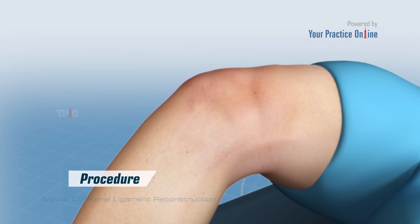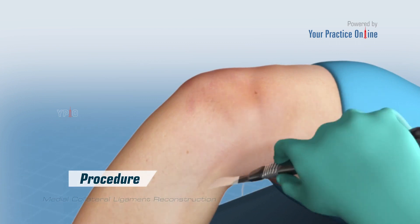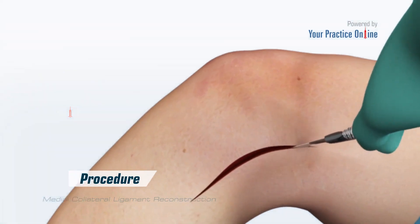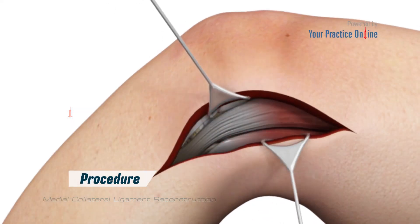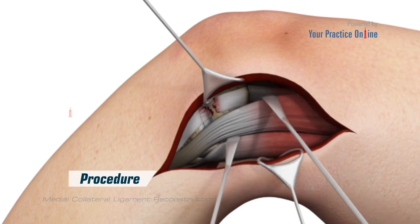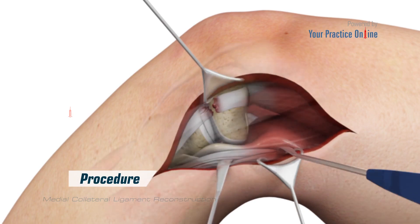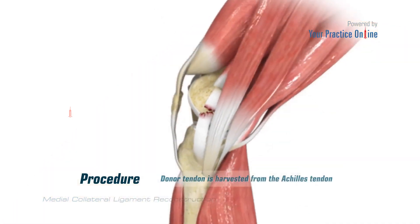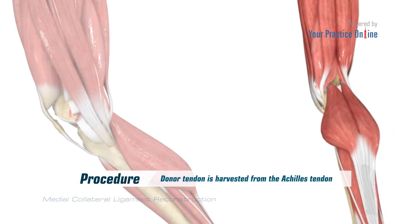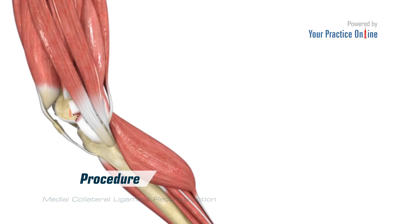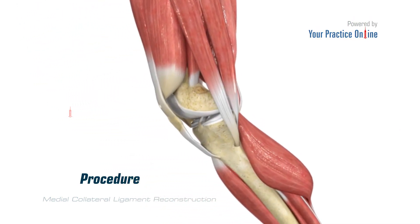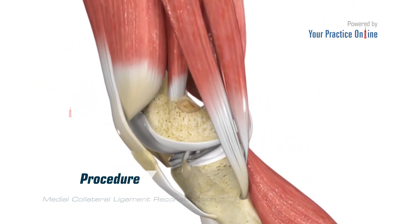Your surgeon will make an incision over the medial femoral condyle. Care is taken to move muscles, tendons, and nerves out of the way. The donor tendon is usually harvested from the Achilles tendon. The soft tissue around the femur is debrided to assist the insertion of the Achilles bone plug.